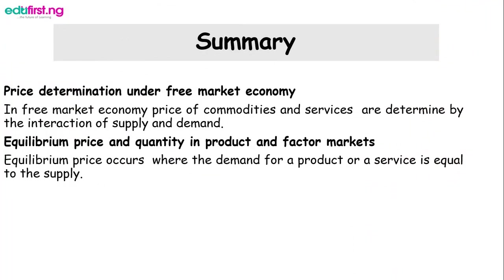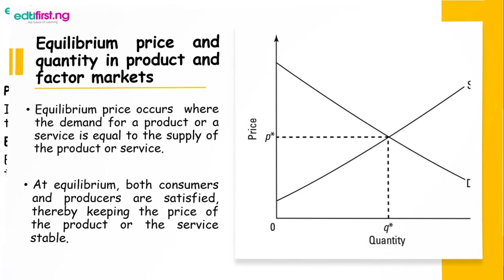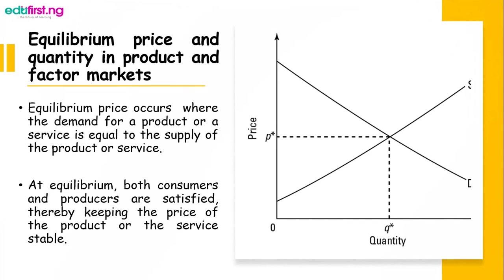Equilibrium price occurs where the demand for a product or services is equal to the supply of that product. At equilibrium price, both consumers and producers are satisfied, thereby keeping the price of the product or service very stable. From the graph we can see a clearing point where the quantity supplied amounts to the price, and this clearing point in economics is called the equilibrium point.